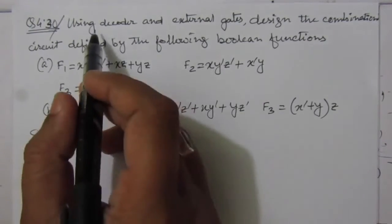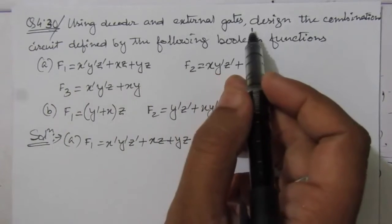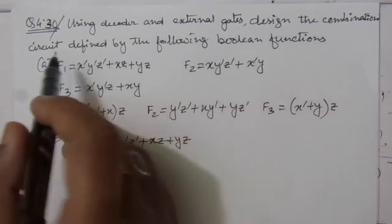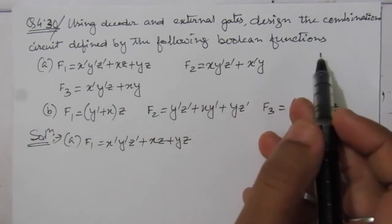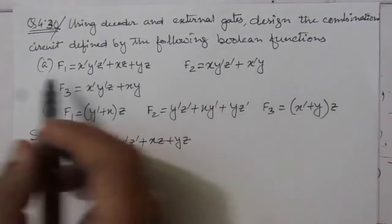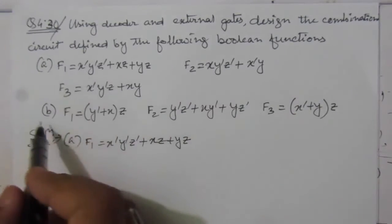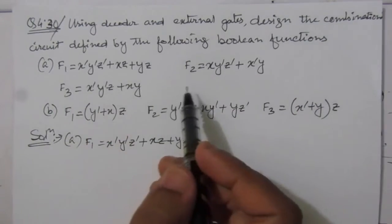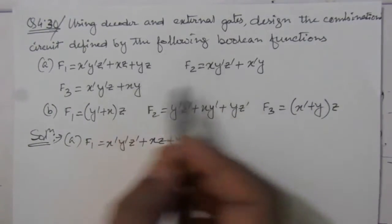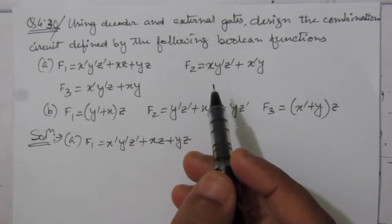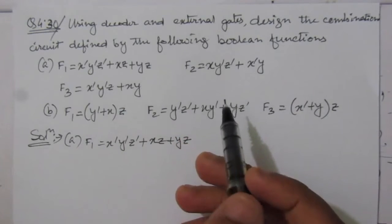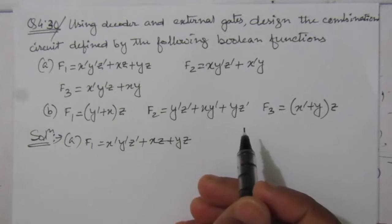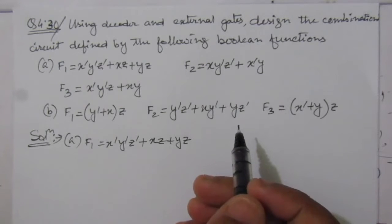The problem is: using decoder and external gates, design the combinational circuit defined by the following boolean functions. We are given two parts of this question. In the first part, we have to realize three functions using decoder and gates, and in the second case we follow the same process.